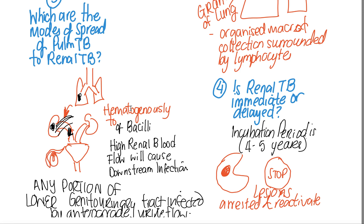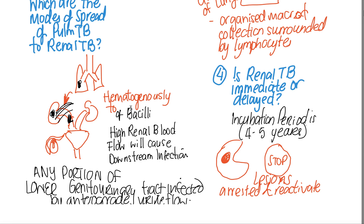The important thing to remember is that you get hematogenous spread of the bacilli. Because of the high renal blood flow, it is likely to spread to the kidneys fast once it reactivates after a couple of years. Any portion of the lower genitourinary tract might be infected by this anterograde urine flow — the urine flows downstream and causes a downstream infection.